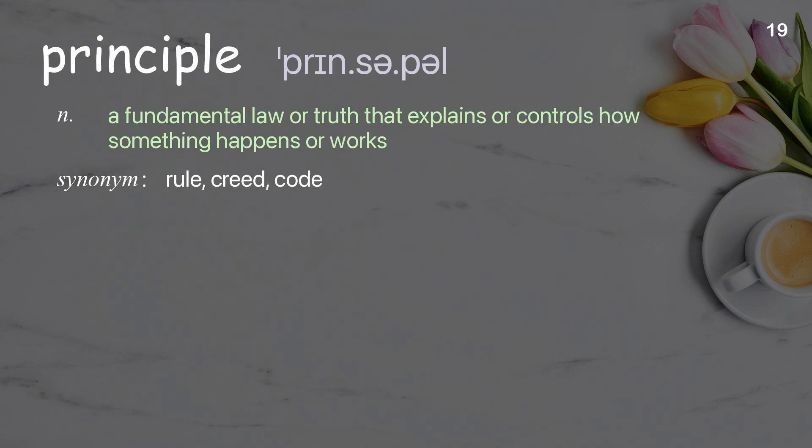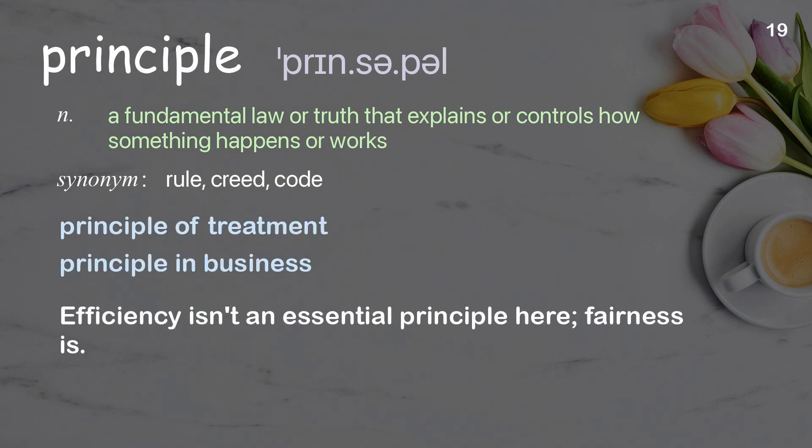Principle: A fundamental law or truth that explains or controls how something happens or works. Examples: principle of treatment, principle in business. Efficiency isn't an essential principle here; fairness is.